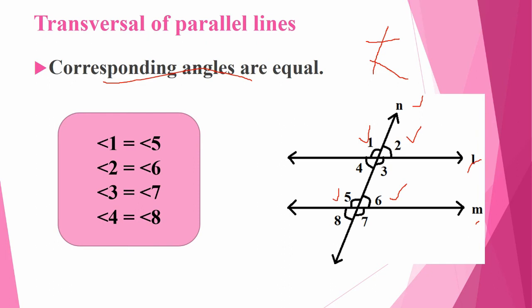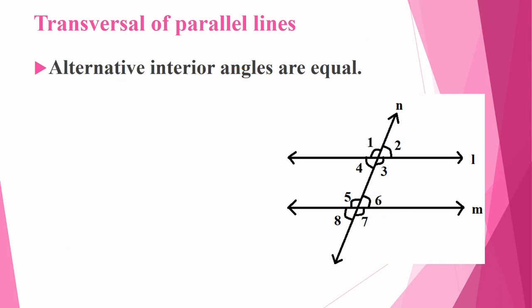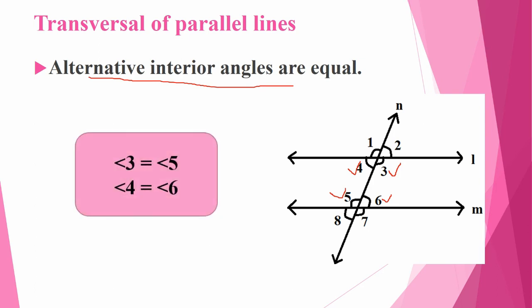So angle 1 and angle 5 are corresponding and equal. Angle 2 and angle 6 are equal. Angle 3 and angle 7 are equal. Angle 4 and angle 8 are equal. This is only for parallel lines — if the transversal cuts non-parallel lines, these special properties do not apply.